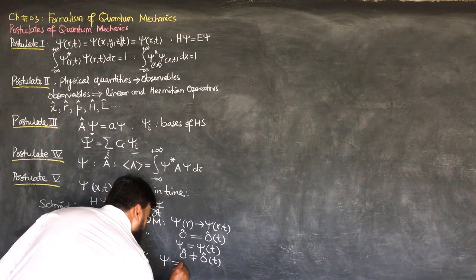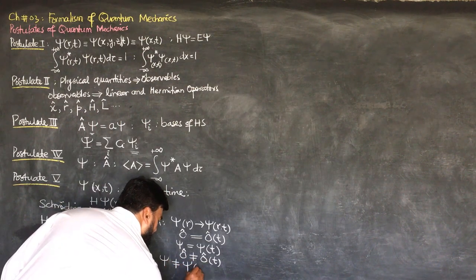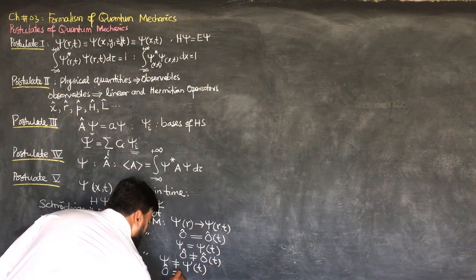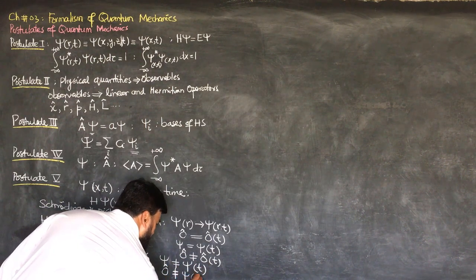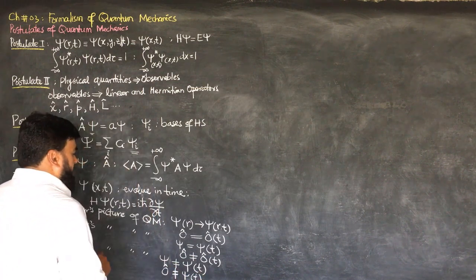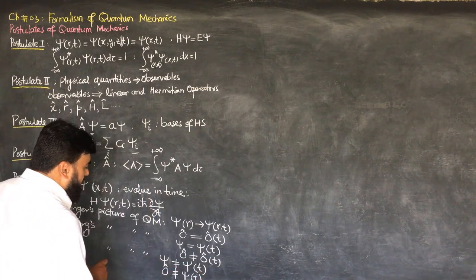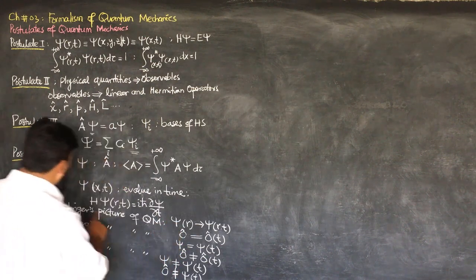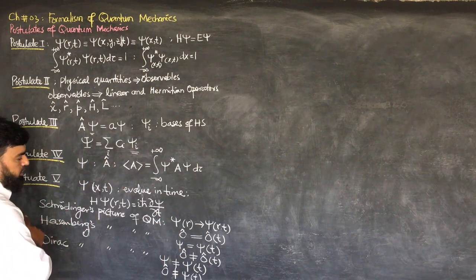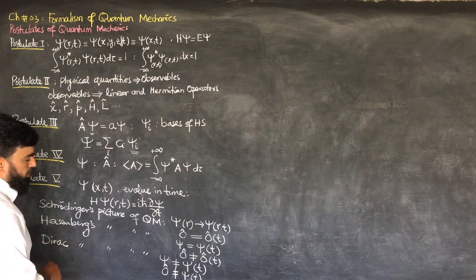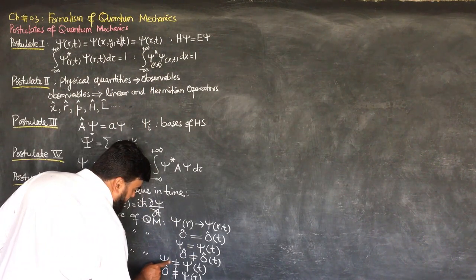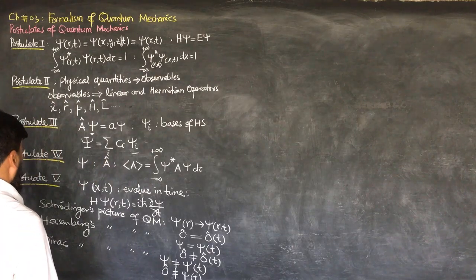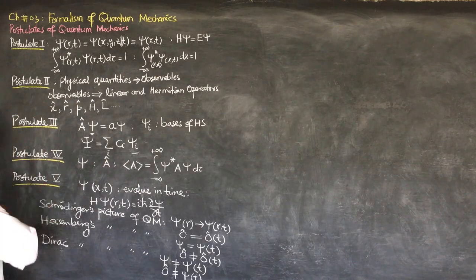The Dirac picture of quantum mechanics states that both the wave function and the operator will evolve in time. He is stating a completely different picture which is a combination of the Schrödinger and Heisenberg pictures — not only the state but also the operator evolve in time. This is Postulate 5.